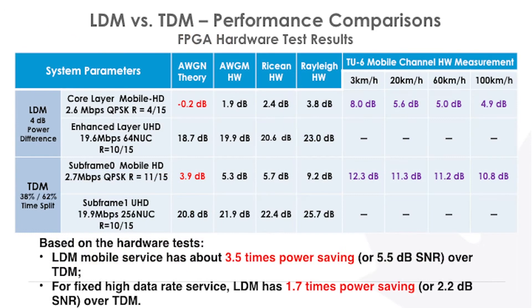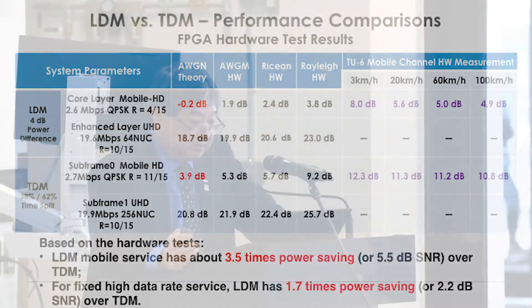Here is the data summary — you only need to read the last two lines. For the mobile service, we achieve 3.5 times power saving. For the fixed service, we have 1.7 times saving. To demonstrate this, I'm going to show you a video — a demonstration carried out in Korea, on Jeju Island. This island is in the middle of the ocean, and they don't interfere with anybody, so you can do anything there.